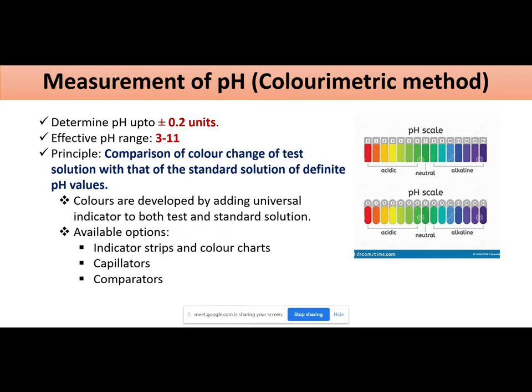For colorimetric method, you can put an example in the background of your pH paper, which you determine. This method basically determines the pH with an accuracy of up to 0.2 units. You can accurately measure pH to 0.2 units. The effective range in which pH is effectively measured is 3 to 11. The principle is: you compare the color produced by the test solution against a set of standards.